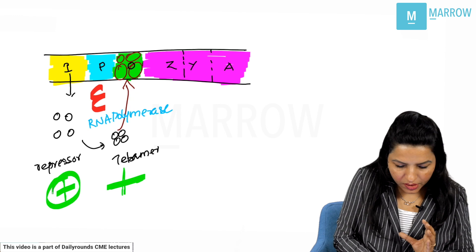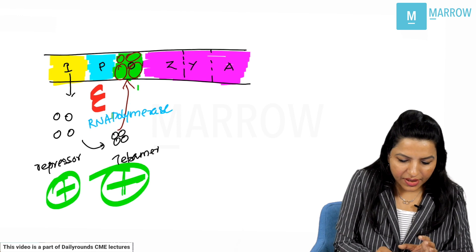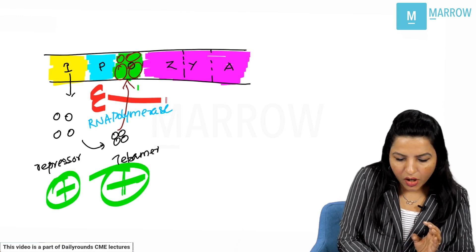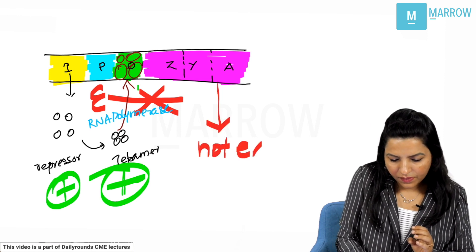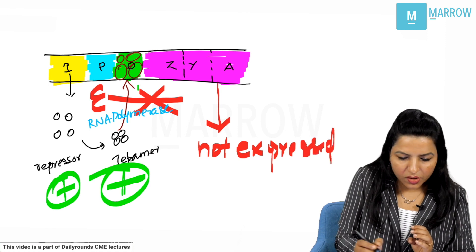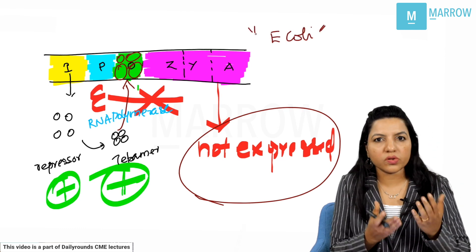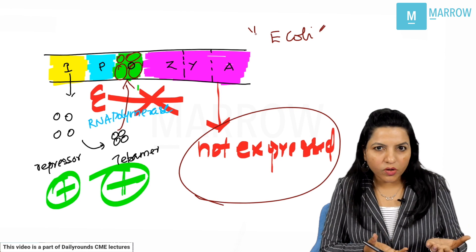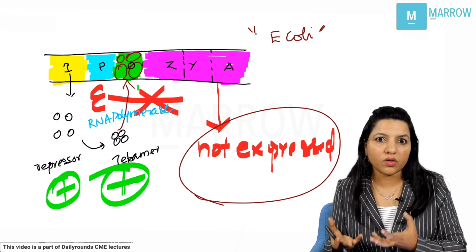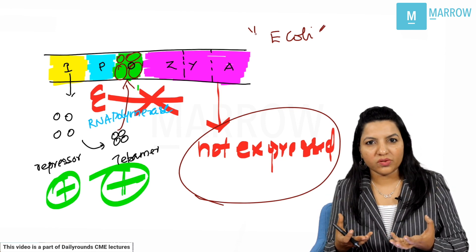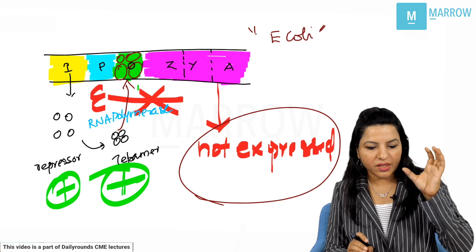When the repressor is active in the tetramer state, it binds to the operator site and the RNA polymerase cannot move forward, which means these genes are not expressed. That is the normal thing happening in E. coli bacteria, because when glucose is present it does not need the lac operon. The structural genes are inducible genes — they are induced only when the E. coli bacteria has no glucose.